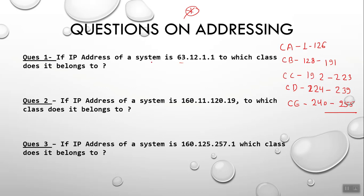So the IP address of the system is 63.12.1.1. Which class does it belong to? This belongs to Class A, since 63 falls in the range 1 to 126. The answer is Class A.